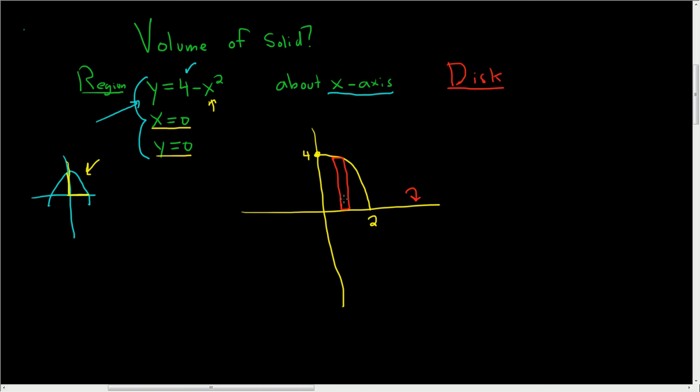Because we have a vertical rectangle, we have a function of x. If we would have had a horizontal rectangle, then we would have a function of y instead.